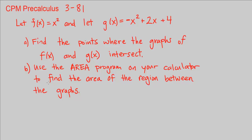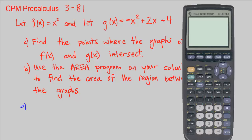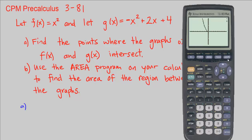Let's do part A. Part A says find the points where the graphs f of x and g of x intersect — that's where they meet. Before we do it algebraically, I want to look at the graphs. I'm going to graph x squared, and y2 I'm going to make g of x: negative x squared plus 2x plus 4, just to see that they intersect in two different places.